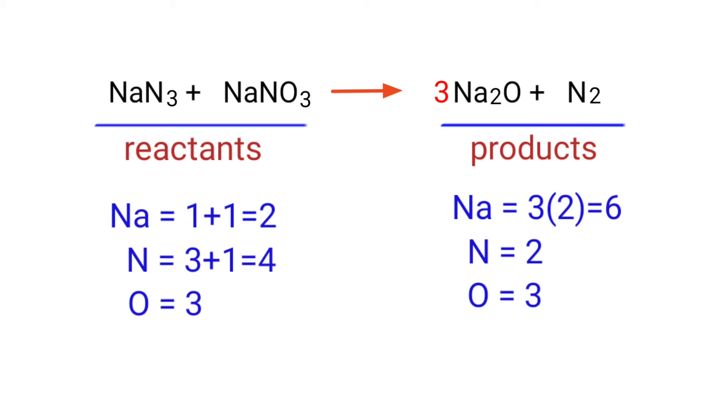The oxygen atoms are balanced, but the sodium atoms are unbalanced. To balance that, we need to put a coefficient of 5 in front of NaN3.